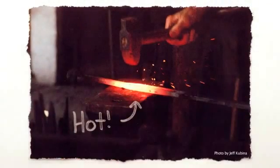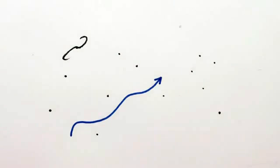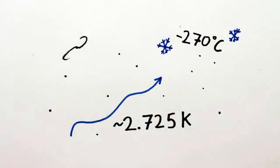And just as we can tell the temperature of a red or white-hot iron from its glow, this light tells us the temperature of empty space, currently around 2.725 kelvin, or minus 270 degrees Celsius.